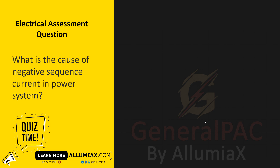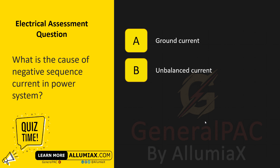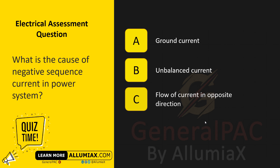What is the cause of negative sequence current in a power system? A. Ground current. B. Unbalanced current. C. Flow of current in opposite direction.